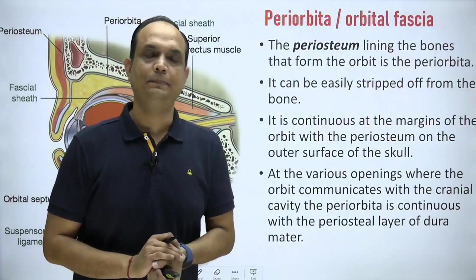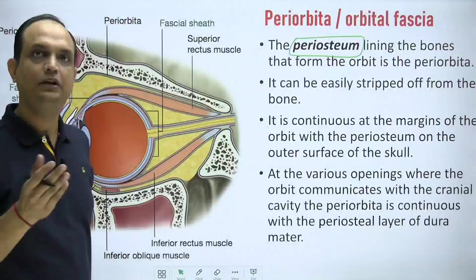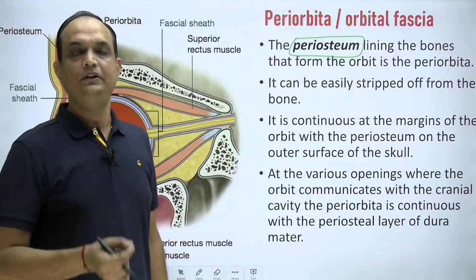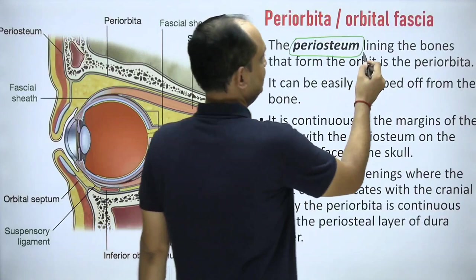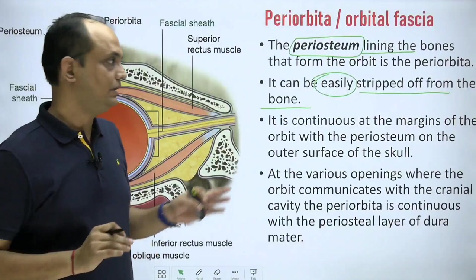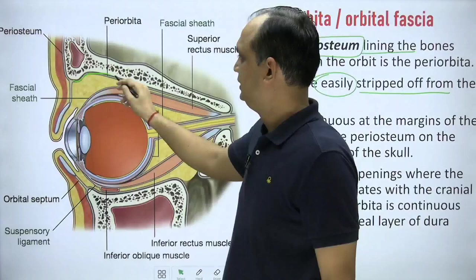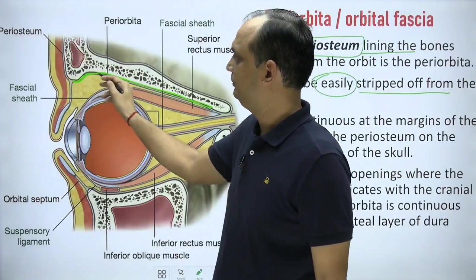The periorbita is also known as orbital fascia. Its literal meaning is the periosteum. Any bone is lined by the periosteum, and the periosteum of the orbital bones is known as periorbita. So it is the lining of the bones that form the orbit. In this diagram, you can see this is the periosteum, which is the inner lining of the bones forming the orbit.